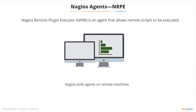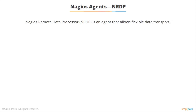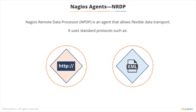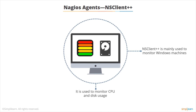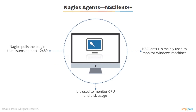The Nagios Remote Data Processor (NRDP) is another agent which allows you to use different protocols like HTTP and XML to transfer information across to the various agents — just another component of the Nagios system. There's also NSClient++, which is for Windows machines. It's typically used for monitoring resources like CPU and disk, and again it does a polling operation where Nagios polls the agent on a particular port number for events.